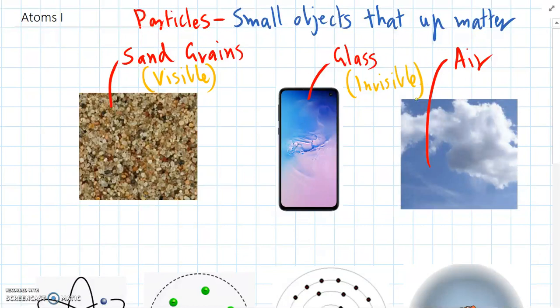And when we zoom in even further inside particles, so if we look inside a sand grain, or we look inside the glass making up your phone, if we keep zooming in, then eventually we will find atoms. So atoms are the smallest particles that make up matter. And that's going to be the focus for this topic.